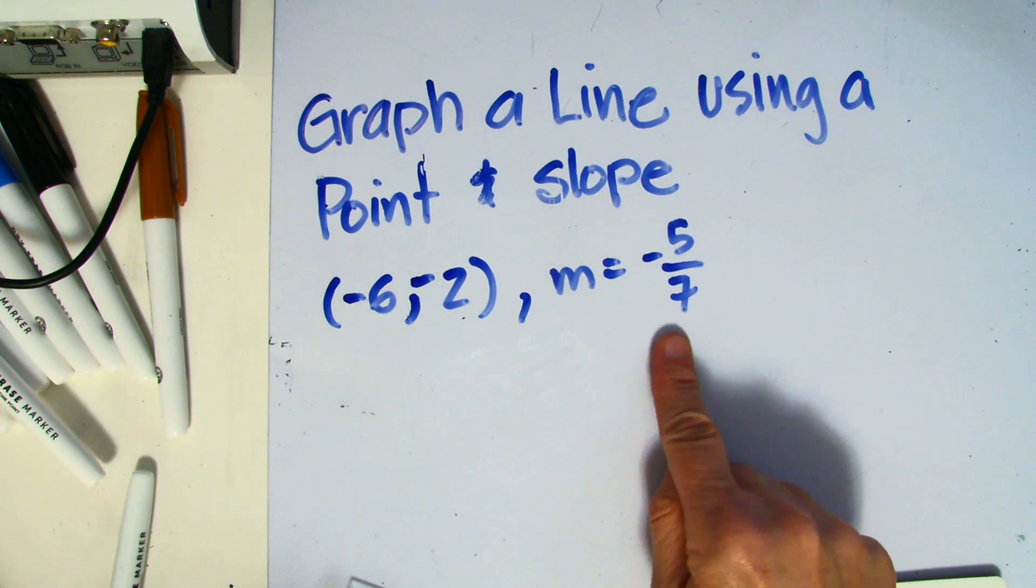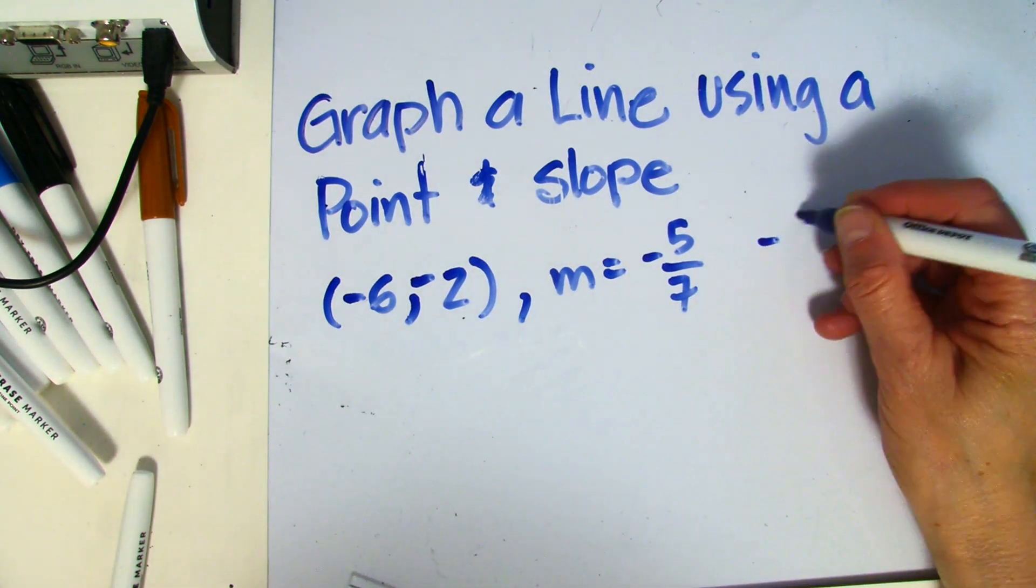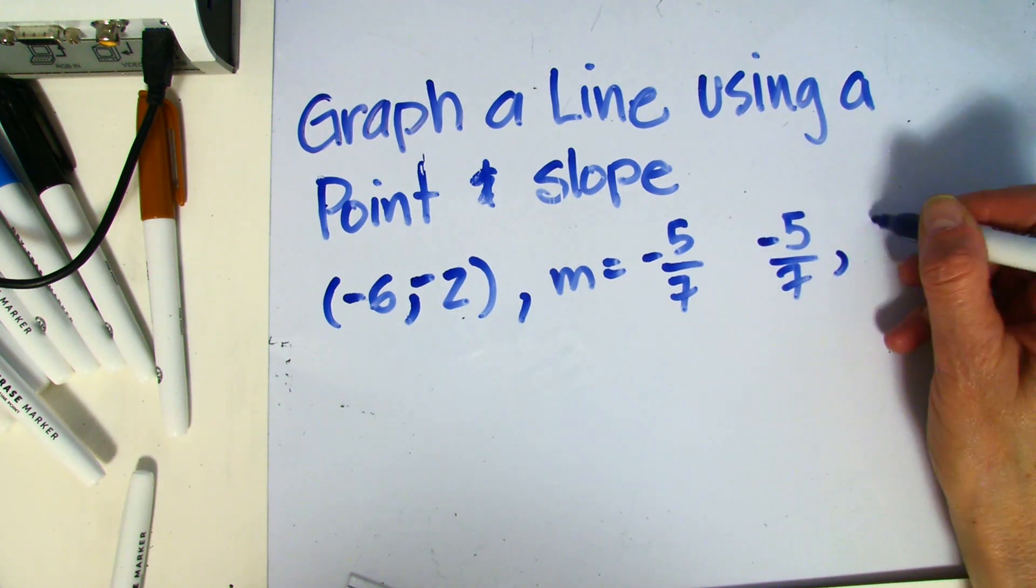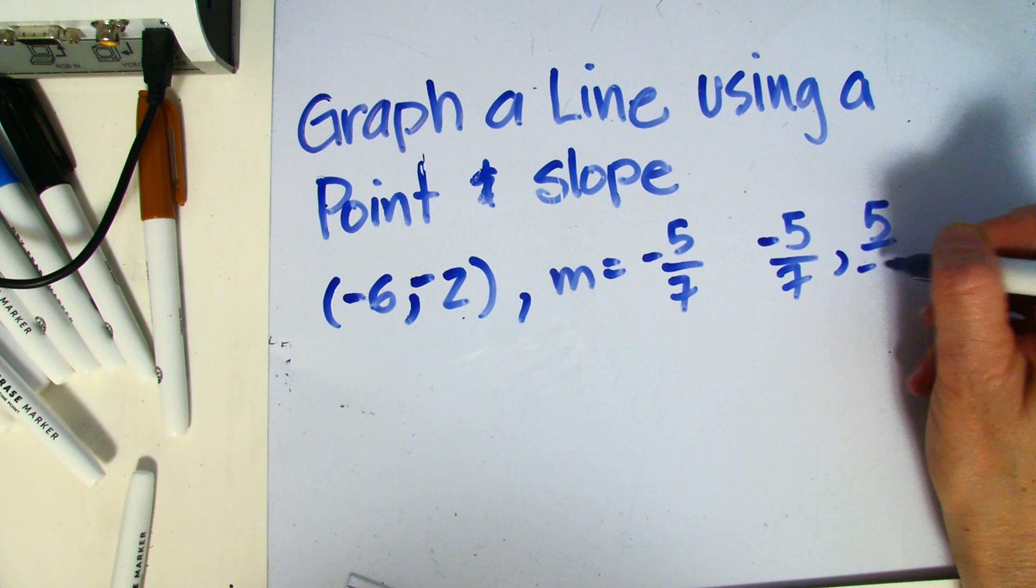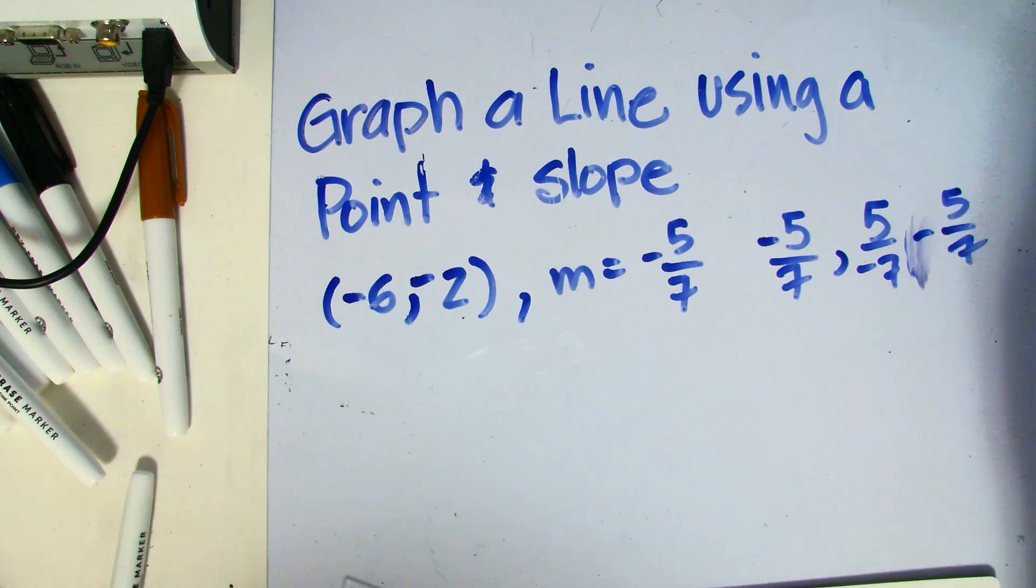So remember, this could be negative 5/7, or 5 over negative 7, or negative 5 over 7. You have choices.